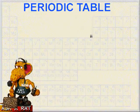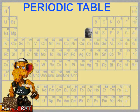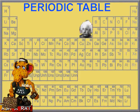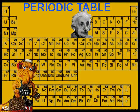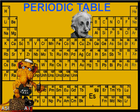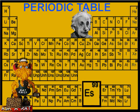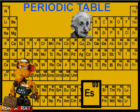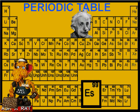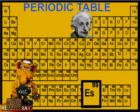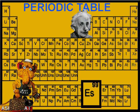Hello there. Today on Ask a Rat, we're discussing Einsteinium. It was first produced in 1952 during the first hydrogen bomb test. Its common isotope is 253. It has a half-life of 471.7 days.